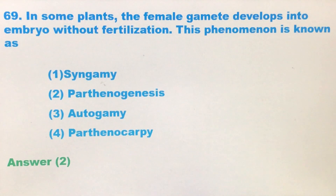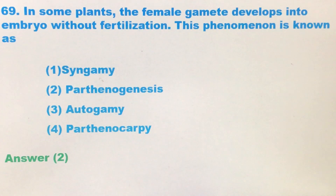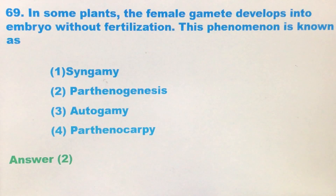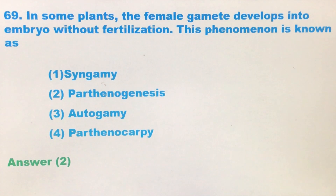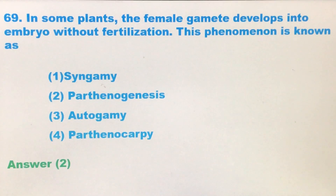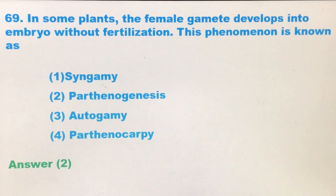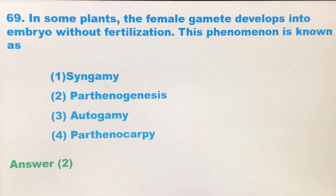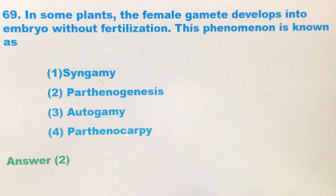Now out of the four options, what is the name for this process? The female gamete develops into embryo without fertilization — that is the second option, parthenogenesis. So the answer is the second option.